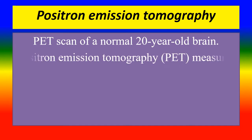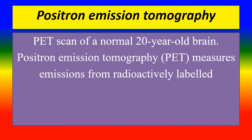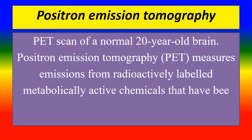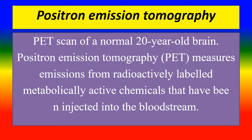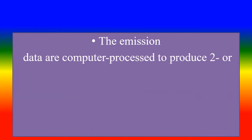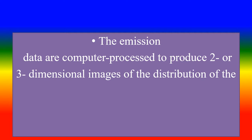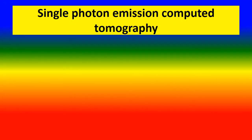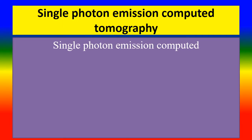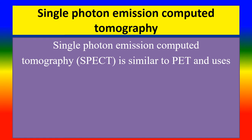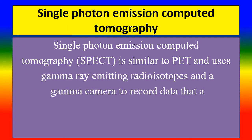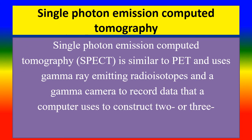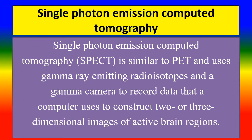PET scans measure emissions from radioactively labelled, metabolically active chemicals that have been injected into the bloodstream. The emission data is computer-processed to produce two or three-dimensional images of the distribution of the chemical throughout the brain. Single Photon Emission Computed Tomography is similar to PET and uses gamma rays emitted by radioisotopes and a gamma camera to record data that a computer uses to construct two or three-dimensional images of active brain regions.